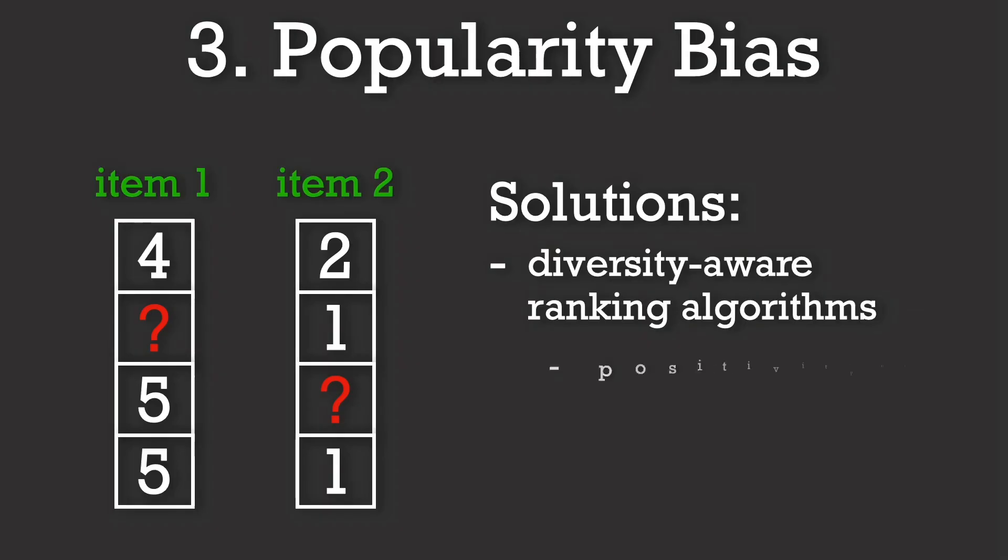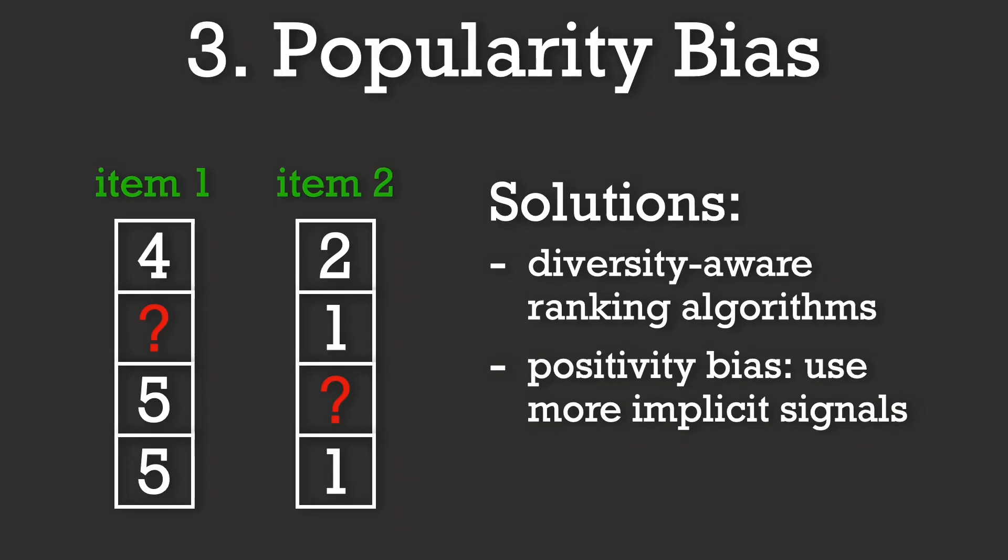Also, a subset of this is the positivity bias problem, where users mainly rate books they like. To counter this, we can use more implicit signals, like tracking the time spent reading, or whether users finished a book, which can give a richer picture of preferences beyond just positive ratings.